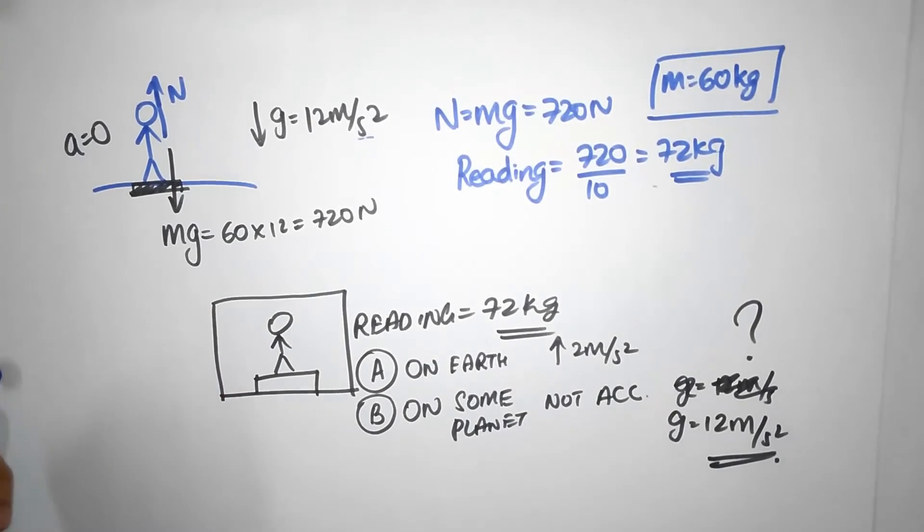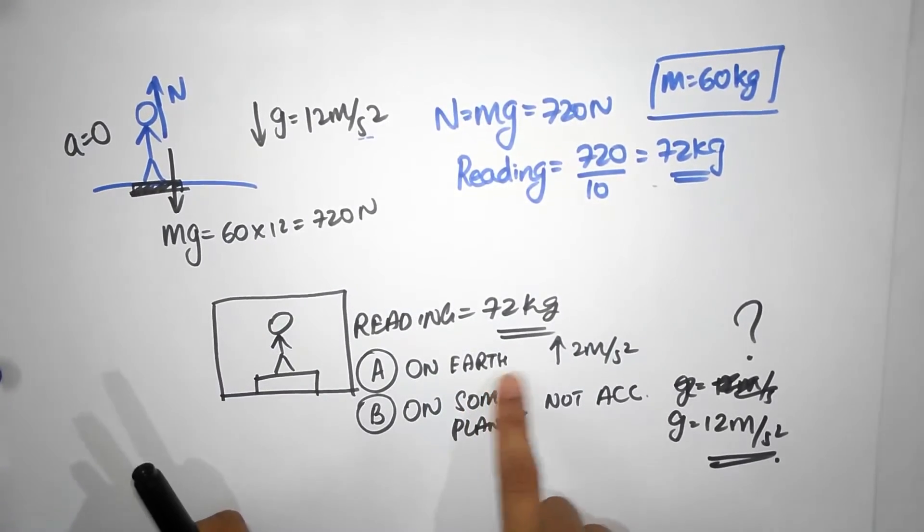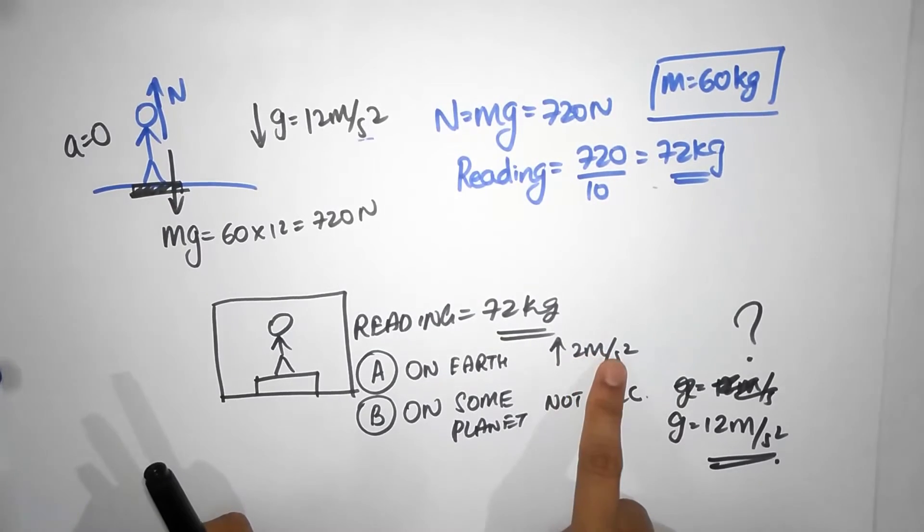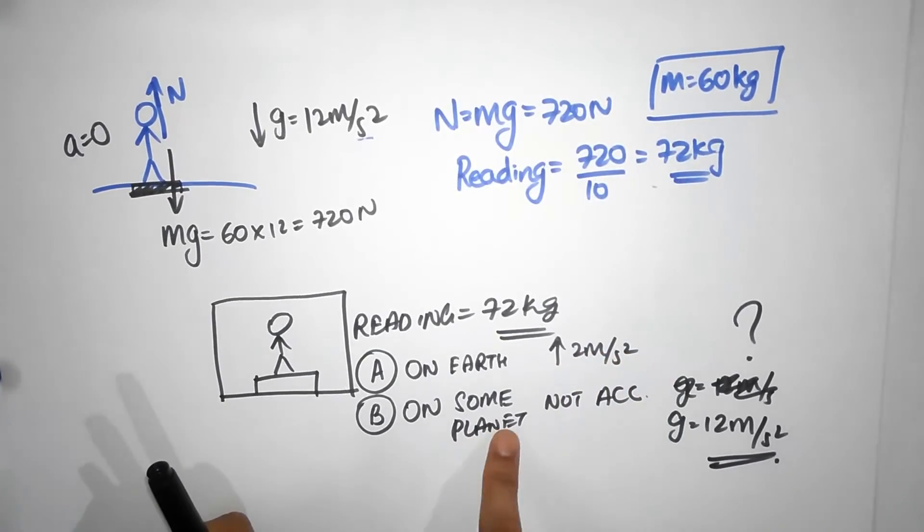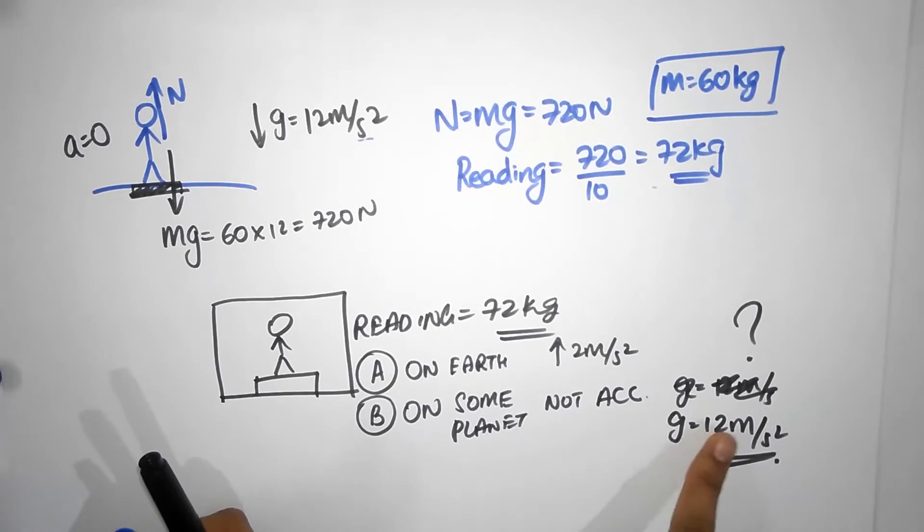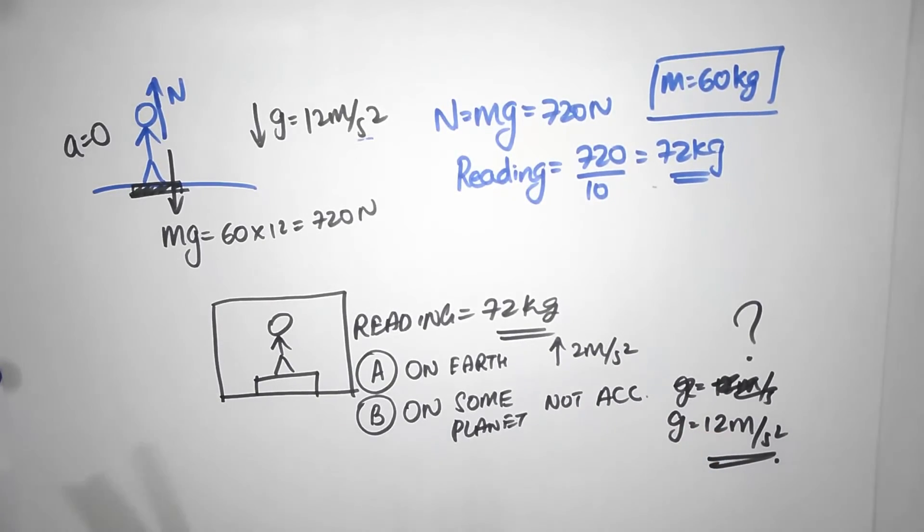So can you come up with any experiment from inside the box to check whether you are on Earth and accelerating up at 2 meters per second squared, or you are on some random planet not accelerating and the planet has a g of 12 meters per second squared? So think about this and I'll see you in my next episode, so stay tuned.